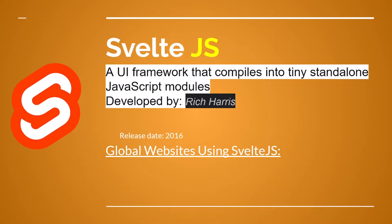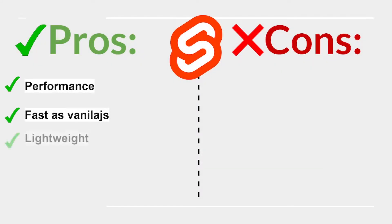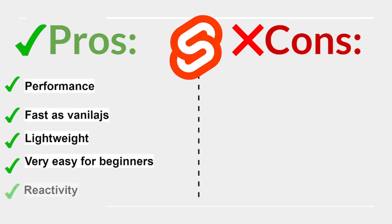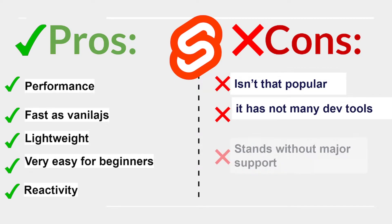Svelte.js is a UI framework that compiles into tiny standalone JavaScript modules, developed by Rich Harris, released in 2016. Used by Spotify and Brave Browser. Pros: performance as fast as vanilla JS, lightweight, very easy for beginners, and reactivity. Cons: isn't very popular, lacks many dev tools, and stands without major support.